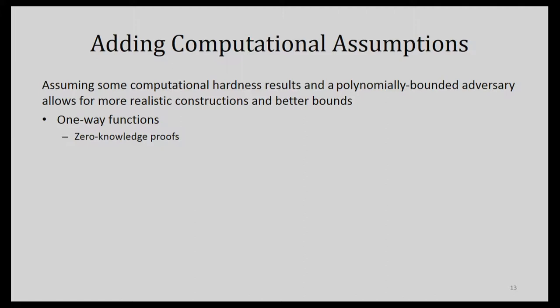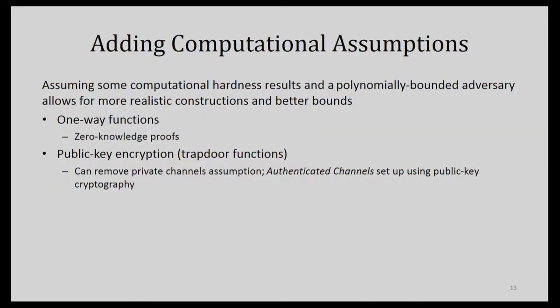If you assume one-way functions, which are the foundation of symmetric key cryptography, you can use zero-knowledge proofs in your constructions. And if you assume the math needed for public key encryption — trapdoor functions — you can get rid of the private channels assumption altogether and just do Diffie-Hellman key exchange with the other parties to set up an authenticated private channel using cryptography, which is what we always do when we surf the web.